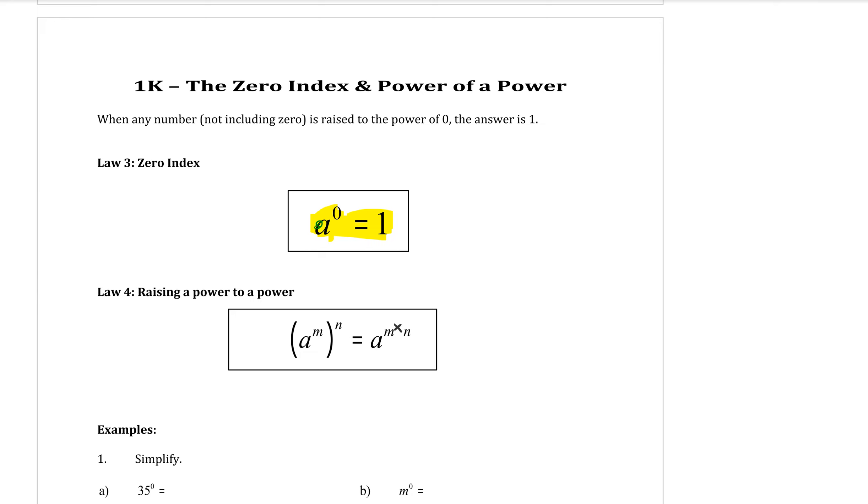The second law we're going to learn about today is when we have brackets and we have powers both inside and outside of those brackets. To expand those brackets out, all you need to do is multiply those powers together. So we have over here M times N.